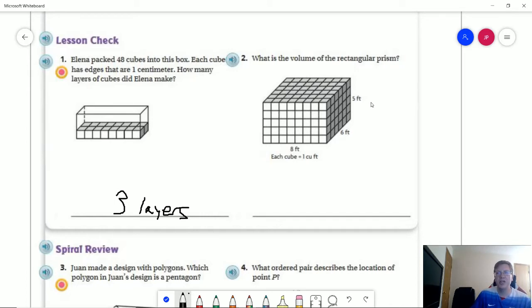And then for this one, we can go ahead and do 48. So 8 times 6 gives us 48 times 5 gives us 290. And that would be cubic feet.